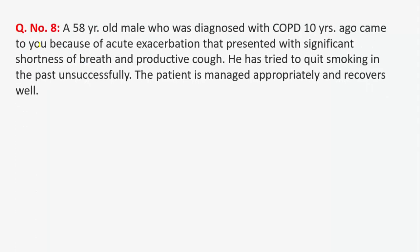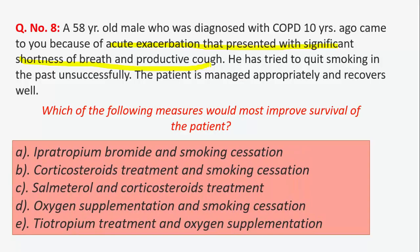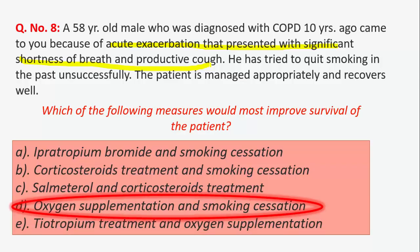Question 8: a 58-year-old male diagnosed with COPD 10 years ago came in due to acute exacerbation with significant shortness of breath and productive cough. He has tried to quit smoking in the past unsuccessfully. The patient is managed appropriately and recovers well. Which measure would most improve survival? Only smoking cessation and oxygen supplementation have been proven to improve survival in COPD patients.